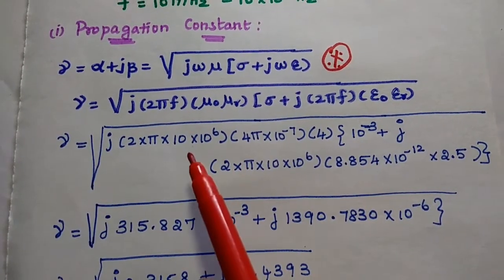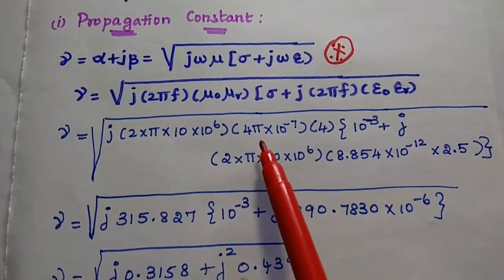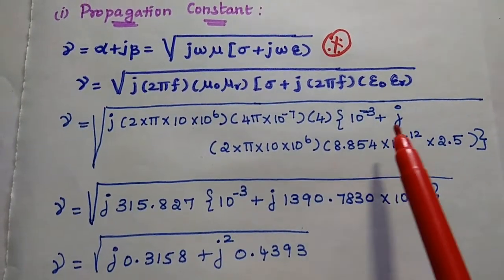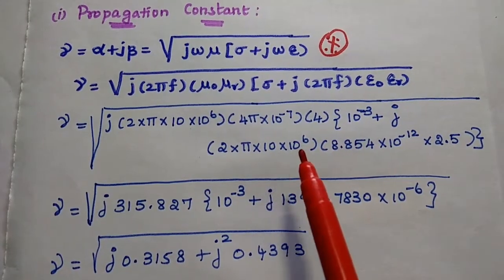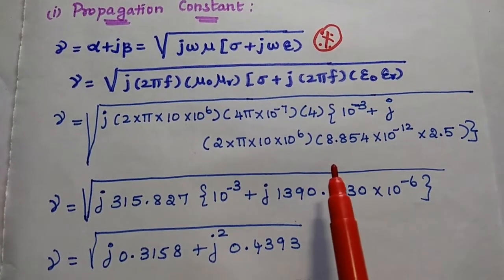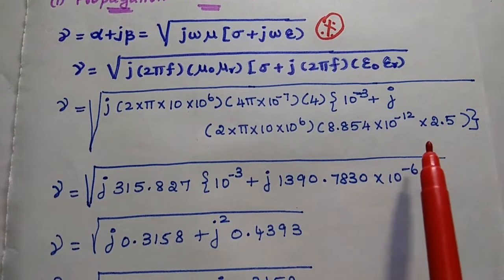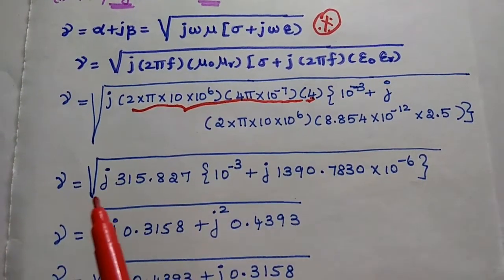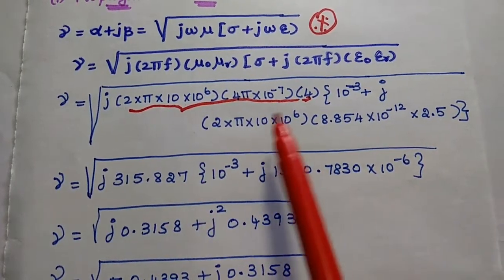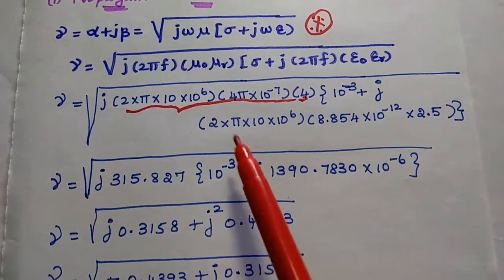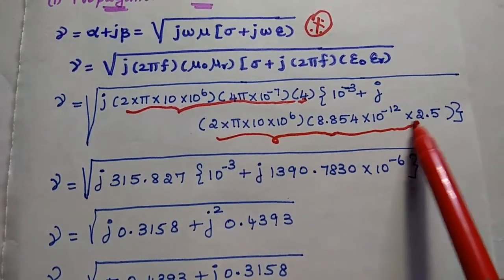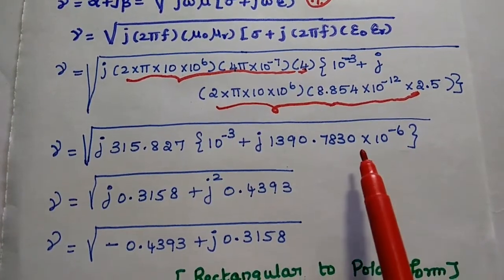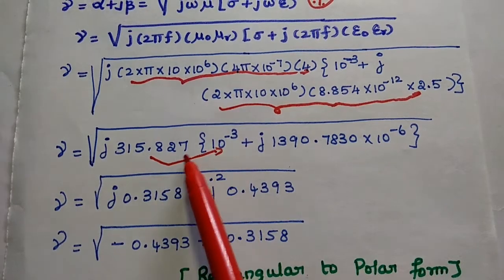Substituting all values: j times 2*pi*f (10 into 10 to the power 6), mu_0 is 4*pi into 10 to the power minus 7, mu_r is 4, sigma is 10 to the power minus 3, plus j times 2*pi*f (10 into 10 to the power 6), epsilon_0 is 8.854 into 10 to the power minus 12, and epsilon_r is 2.5. Multiplying all terms gives j*315.827 times 10 to the power minus 3, plus j times 1397830 into 10 to the power minus 6.